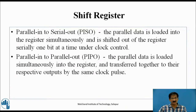In Parallel In Serial Out (PISO), the parallel data is loaded into the register simultaneously, and is shifted out of the register serially one bit at a time, under clock control. In Parallel In Parallel Out (PIPO), the parallel data is loaded simultaneously into the register and transferred together to their respective outputs by the same clock pulse.